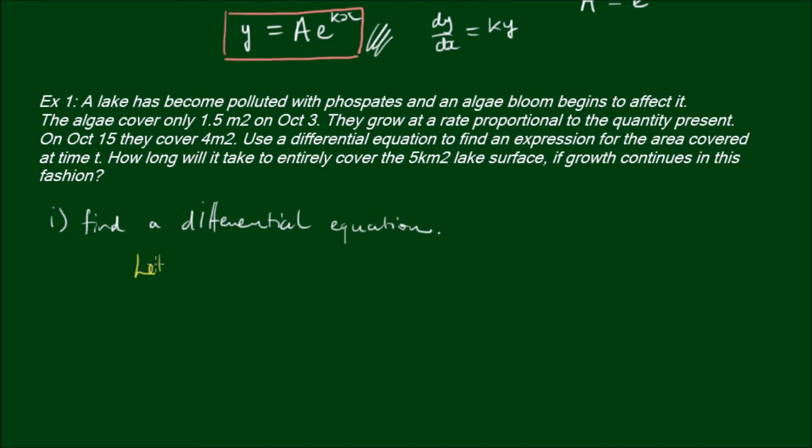Let's let A equal the area covered at time t. So A is a function of t. It's stated here they grow at a rate proportional to the quantity present, so the rate of change of the area dA/dt is proportional to the quantity present, so proportional to the area that's current.